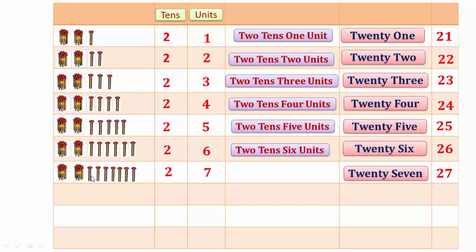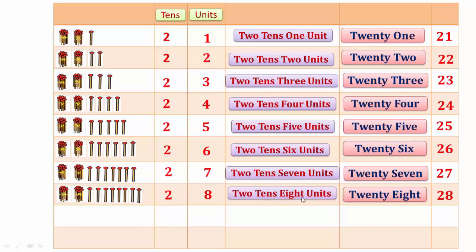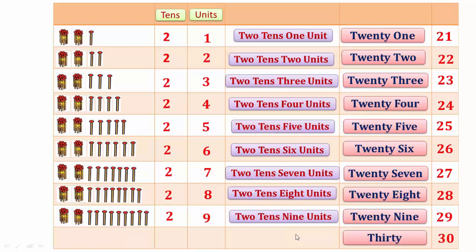In 28, two tens and eight units make 28. In 29, two tens and nine units make 29. In 30, there are three tens and zero units. Three tens make 30.